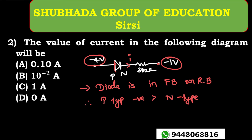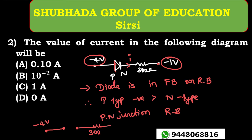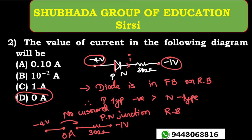Since the P-type is more negative than the N-type, the PN junction diode is reverse biased. A reverse biased diode acts like an open circuit. With the diode as an open circuit — minus 4 volt source, a 300 ohm resistor, and minus 1 volt — no current flows, so the answer is 0 ampere. Option D is the right answer.